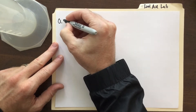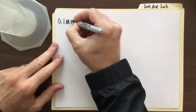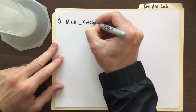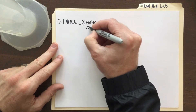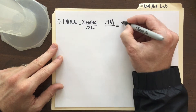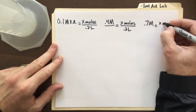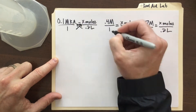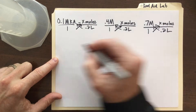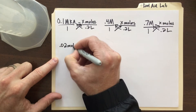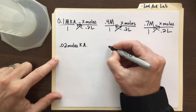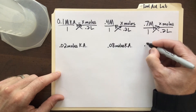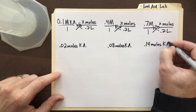Now let's use the formula to figure out how many moles we'll need for each solution. I'll set up molarity equals x moles over 0.2 liters, and do that for all three problems. I'll take the molarity value over 1 and cross multiply. The first solution needs 0.02 moles of Kool-Aid, the second needs 0.08 moles, and the last needs 0.14 moles of Kool-Aid.